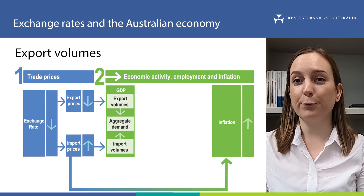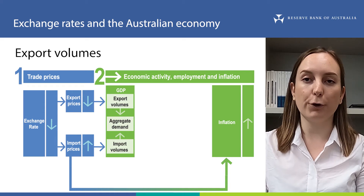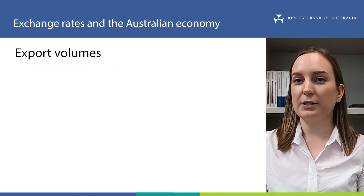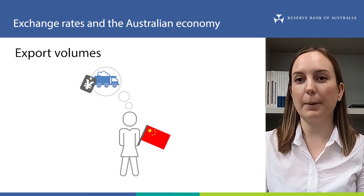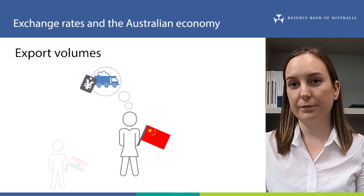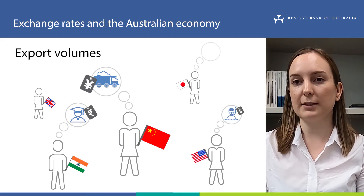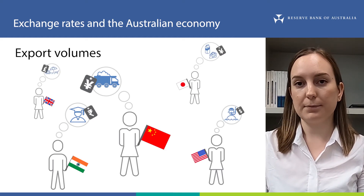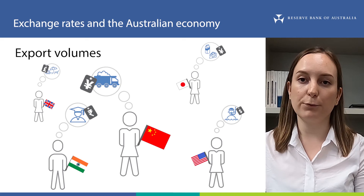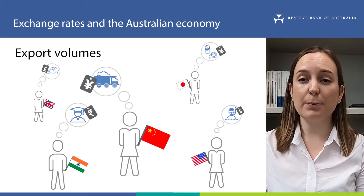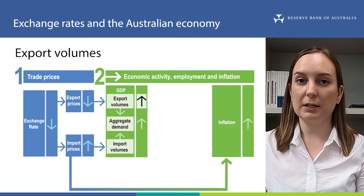A depreciation in the Australian dollar reduces the price of exports in Australian dollars for foreigners. If our exports are cheaper, they become more competitive in international markets where other countries might be trying to export similar goods and services. Since our exports are now cheaper, foreigners will demand more Australian goods and services, and as a result exports will increase. For example, when the exchange rate depreciates, more foreigners tend to come to Australia for a holiday because it's cheaper relative to before. If exports increase, this increases aggregate demand and GDP.